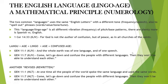This enlightenment will help you see the facts as well as the knowledge dealing with the alphabet. The English language or lingo-age, a mathematical principle of numerology. The two common languages use the same English letters with a different tone, frequency, or speech. Also to spell out phrases and words with value, tone, and tune. This language is all different vibrations and frequencies of pitch-bass patterns. There are plenty more.